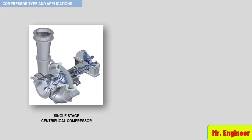Let's see together the different elements or components of this special rotating equipment. Here you have the suction of the compressor, and here the discharge. Notice how the discharge is perpendicular to the suction, or in other words, radial. For this reason, these types of compressors are also referred to as radial compressors.